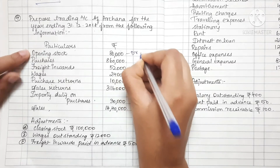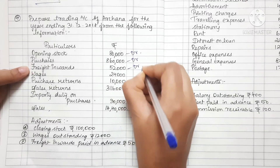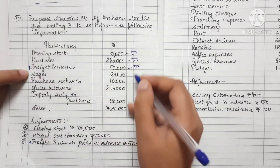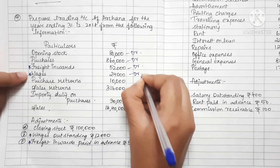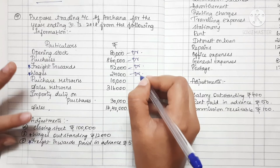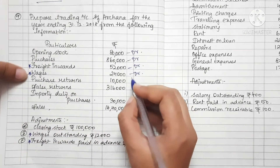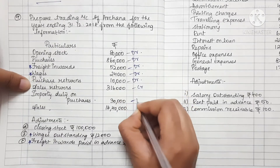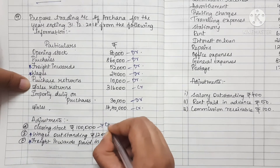On the debit side: opening stock, purchases (debit), freight inward (debit with adjustment), wages, purchase return (debit side reduction), sales return (credit side reduction), import duty (debit). Closing stock goes on the credit side.